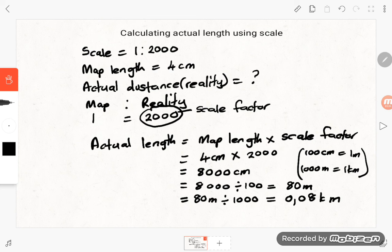Let me double check on the calculator: 80 divided by 1000 is equal to 0.08 kilometers. So our final answer is 0.08 kilometers.